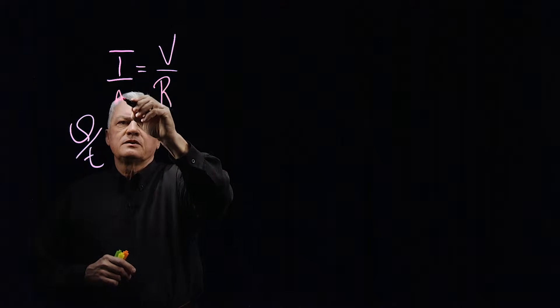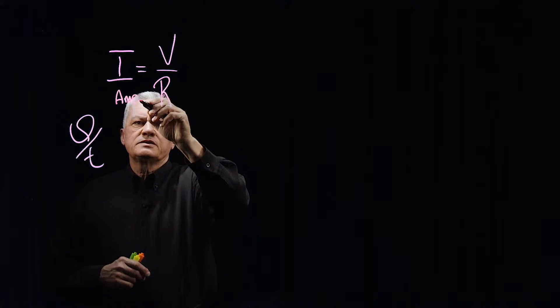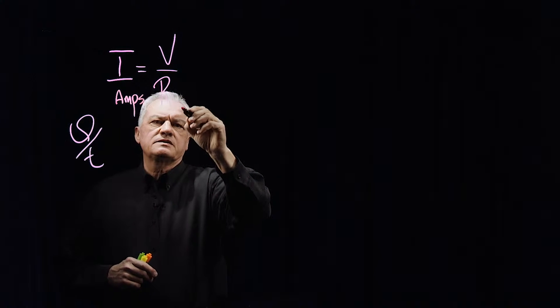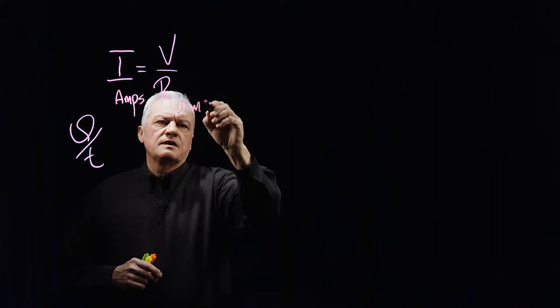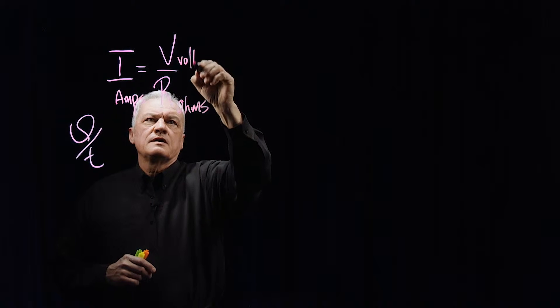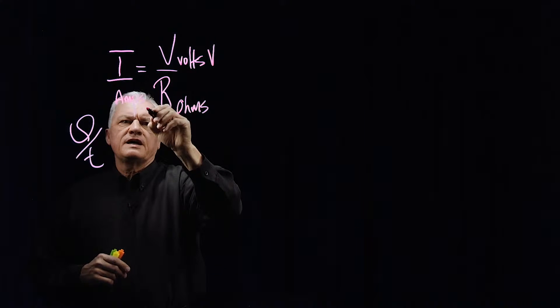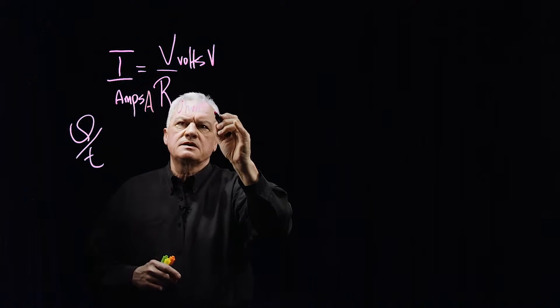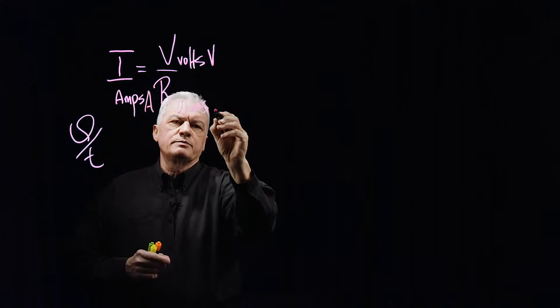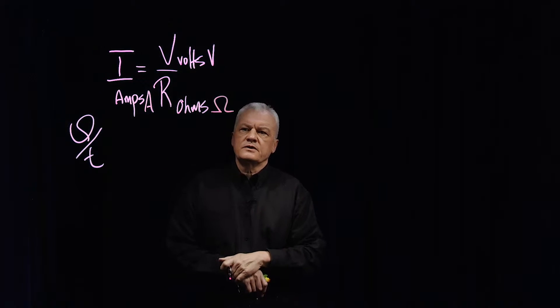Just to recall, we denote the current flow in amperes, or amps for short, resistance in ohms, and voltage in volts. We use the capital V for volts, we use the capital A for amps, but we use the letter omega from the Greek alphabet, and that's a symbol for capital O in Greek, for resistance.